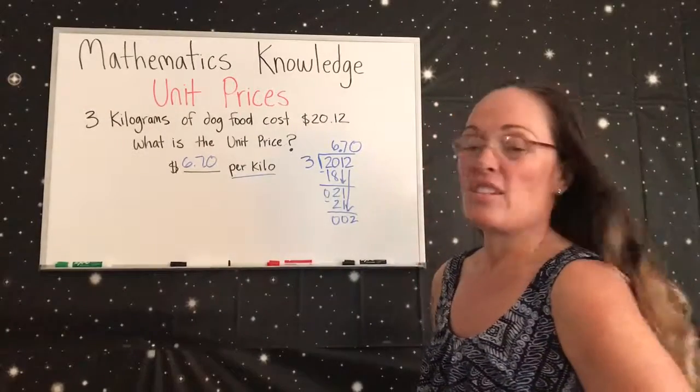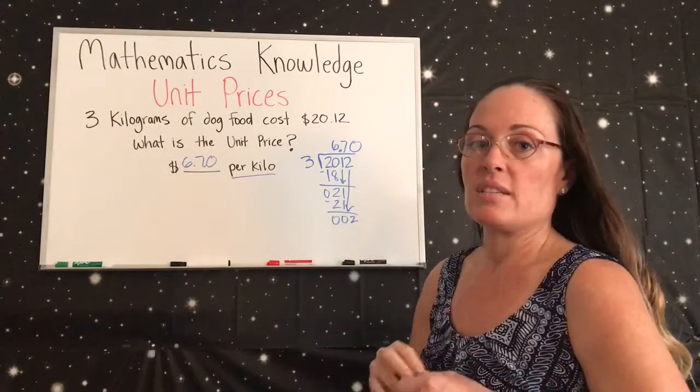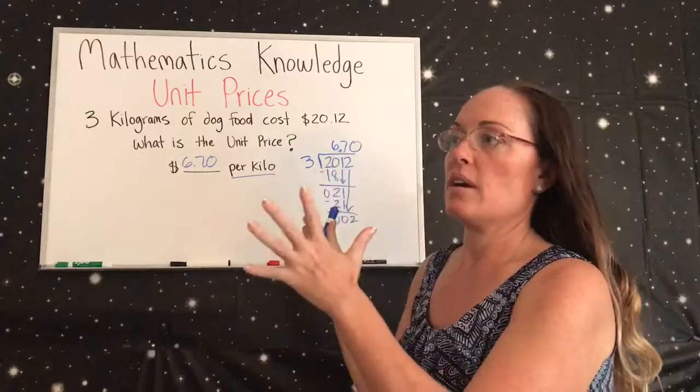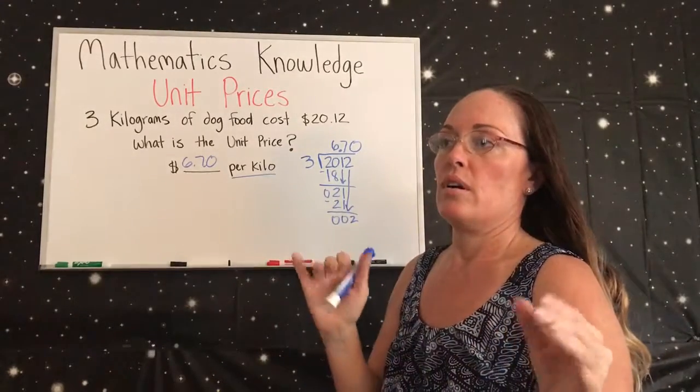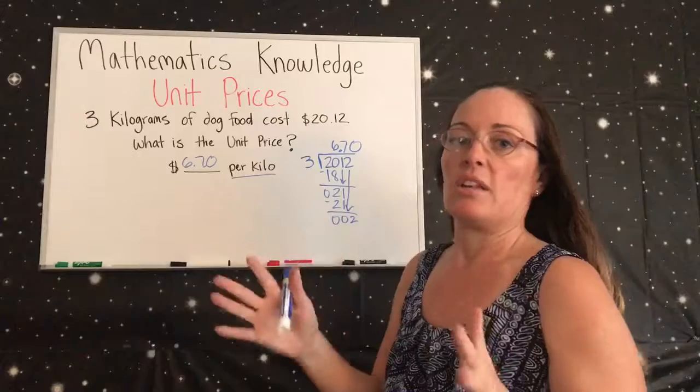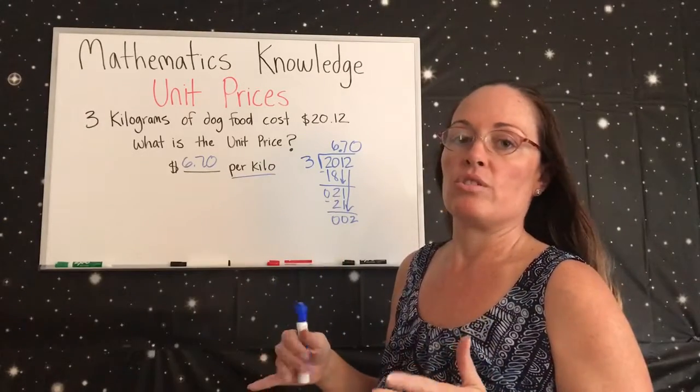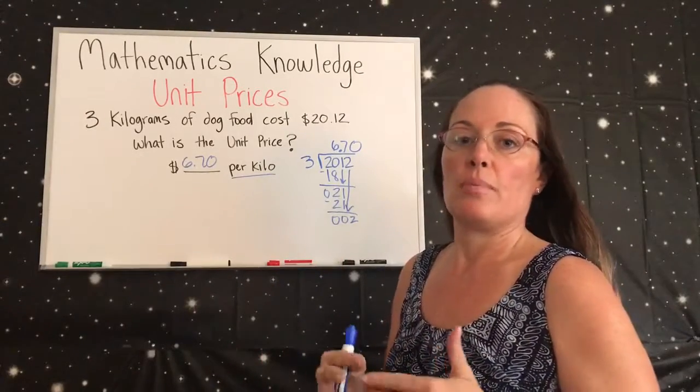That's all they're really asking. Unit price is basically saying you have a big amount that you spent for pounds or kilos of something, and they want to know how much per pound or kilo did you pay for it.